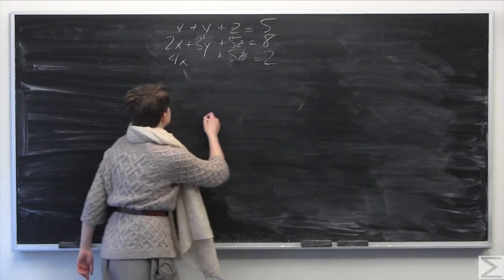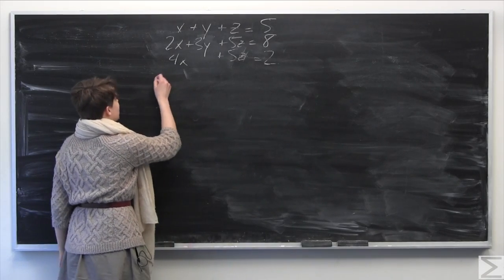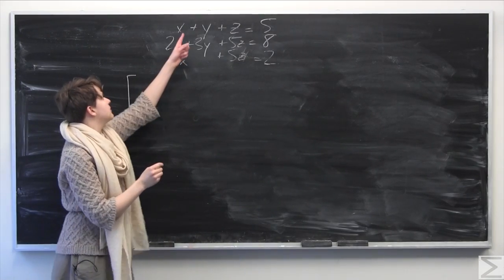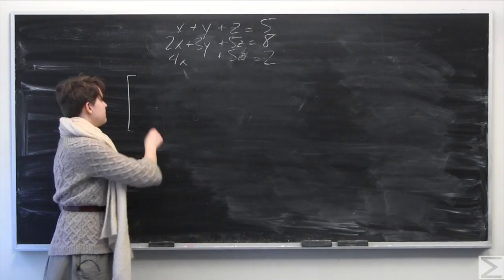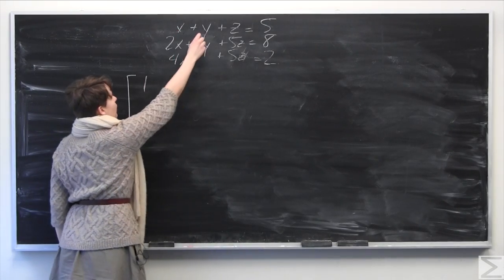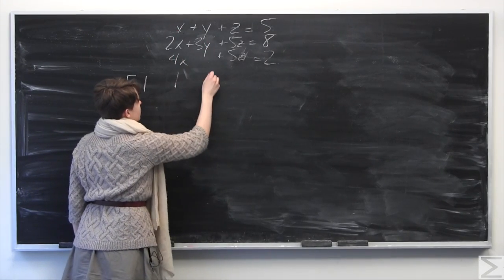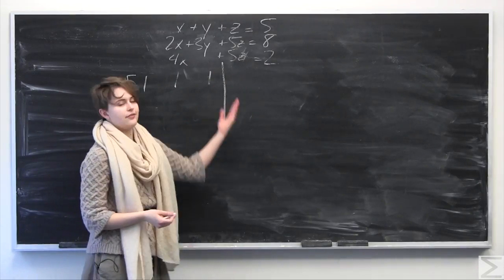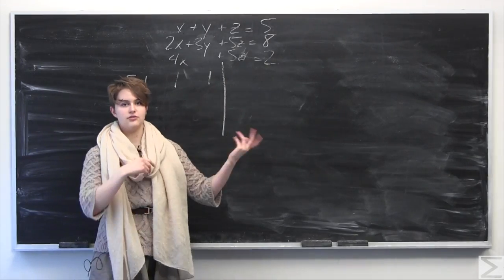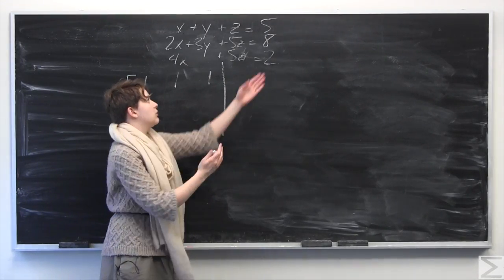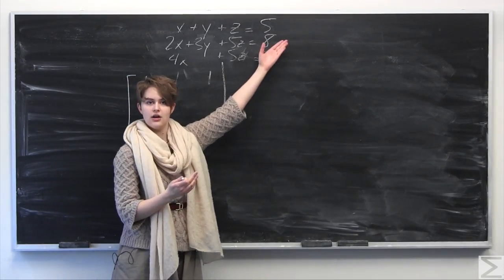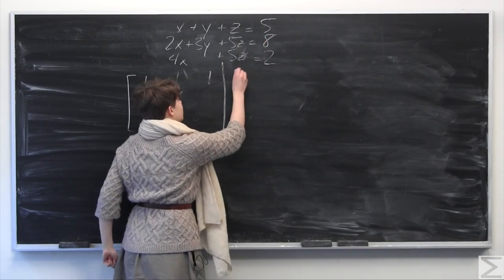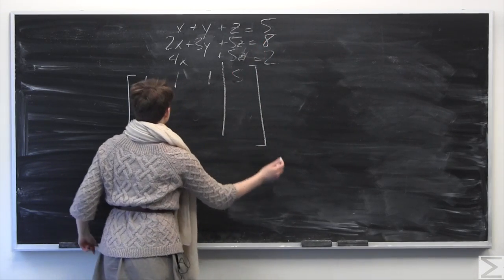The way that we're going to do this is we're going to take off the coefficients of all the variables. So we take off the x coefficient here, which is one, the y coefficient, which is one, and the z coefficient, also one. Then we put a little line here to delineate which are the coefficients and which are the constants. On the right side of this, we take the constant, which is just going to be five, and then we can close our matrix.